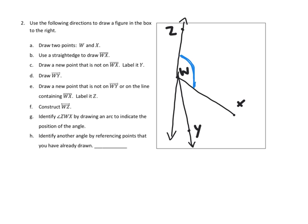Part H: identify another angle by referencing points already drawn. I'm thinking of this angle right here — it looks like a pizza slice — which is angle XWY. W is at the middle, X is one point on one side of the angle, and Y is pointing at the other side. So I'll put that in red: angle XWY. W is at the heart of that angle, with X and Y on either side.